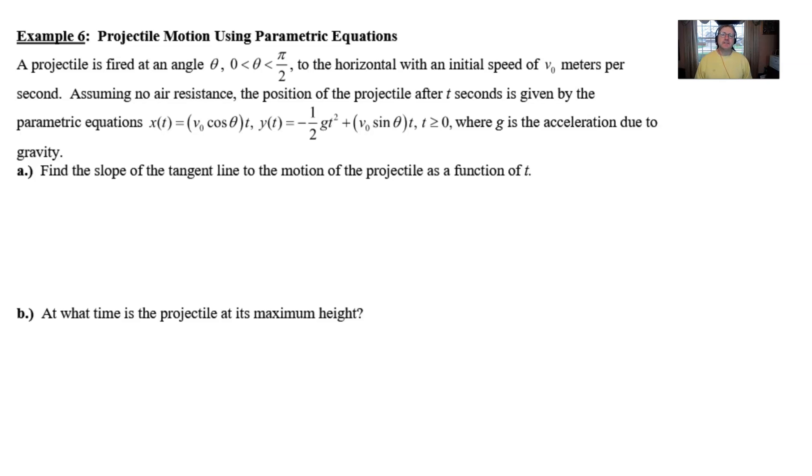And we're told that t is only going to be positive or zero in this case, and g is the acceleration due to gravity.